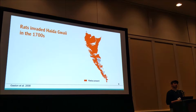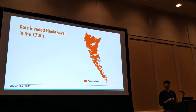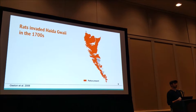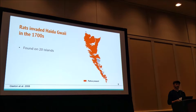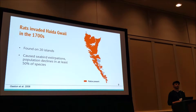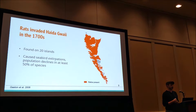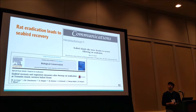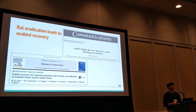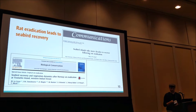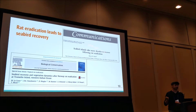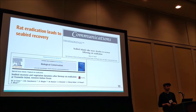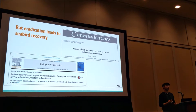Unfortunately, rats have invaded Haida Gwai. They arrived sometime in the 1700s, likely from European settlers, and they've since spread throughout the islands. This has resulted in devastating negative impacts on native seabird populations, as well as other systems. Fortunately, eradication of rats from whole islands can lead to seabird recovery, and in some cases can be reported in a very short period of time. It's already been seen in Haida Gwai.